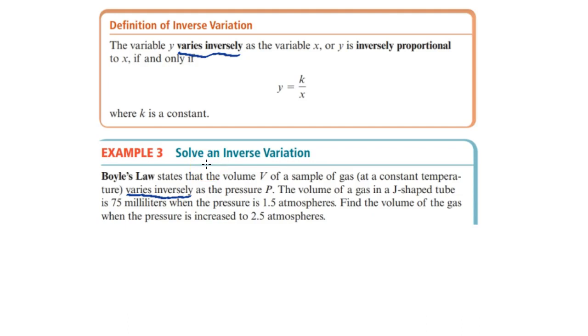So if it varies inversely, then we know if we have y varies inversely as the variable x, or something varies inversely to x, then we are in the form y equals k divided by x, where k is a constant.